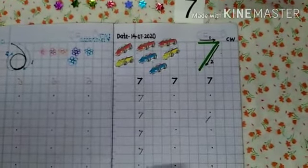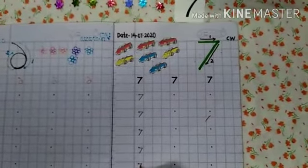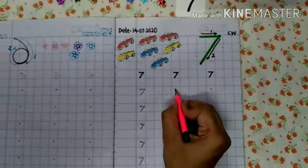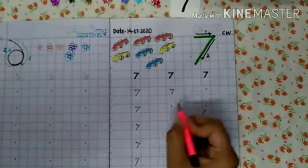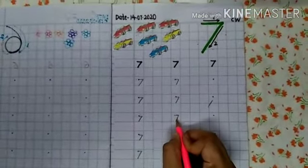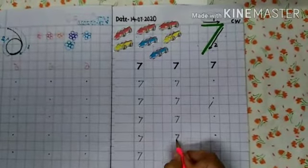After 6, what will you write? 7. Remember that you have to touch the bottom line. 7. Which number is this? 7. Speak out.